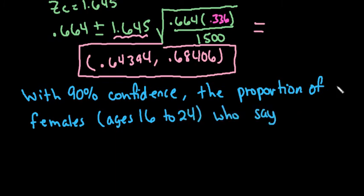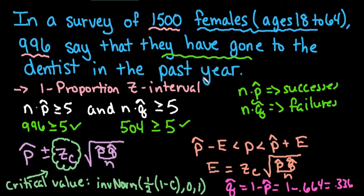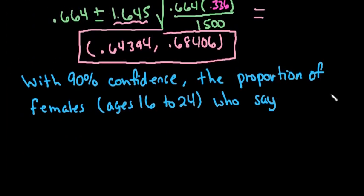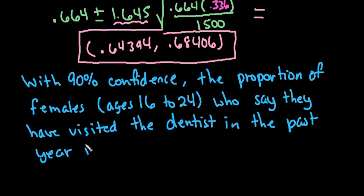Who say... and now we want to look at the rest of the context. In this case remember they are saying that they have gone to the dentist in the past year and we're talking about the entire population. So the proportion of all females ages 16 to 24 who say they have visited the dentist in the past year.